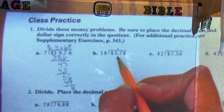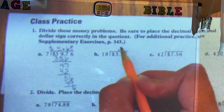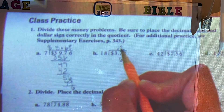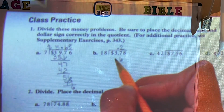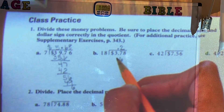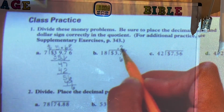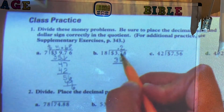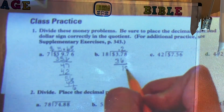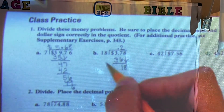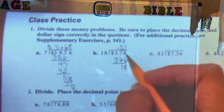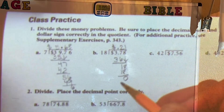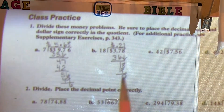18 doesn't go into 3, but it goes into 37. So how many times? That would be 2. 2 times 18 is 36. If we subtract 37 minus 36, it is 1, and we bring down the 8. Then 18 into 18, that's going to be 1. 1 times 18 would be 18, and we have no remainder. So this would be 21 cents.